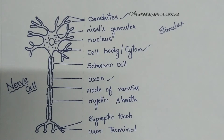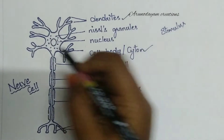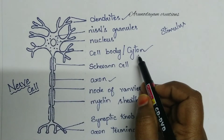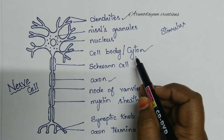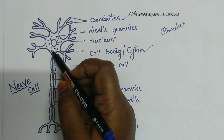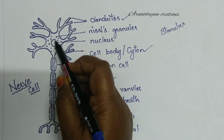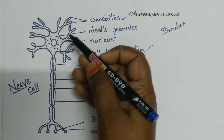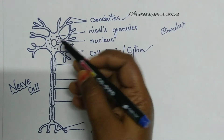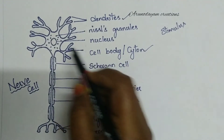The first part is the cell body, also called cytone, perikaryon, or soma. This cell body contains a centrally placed prominent nucleus. Every cell contains a nucleus, and in the nerve cell this nucleus is present in the cell body — the cytone.